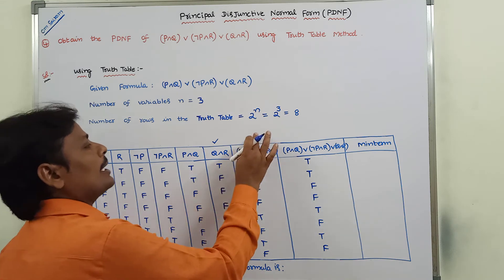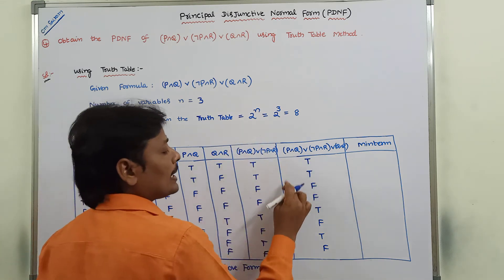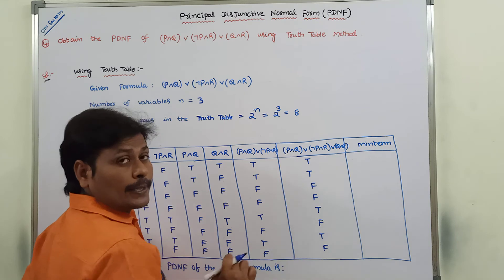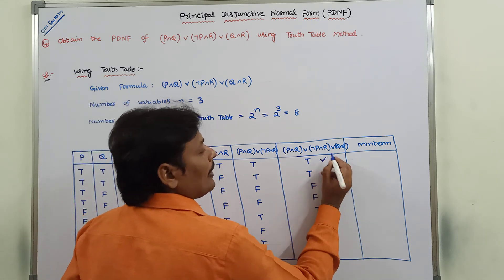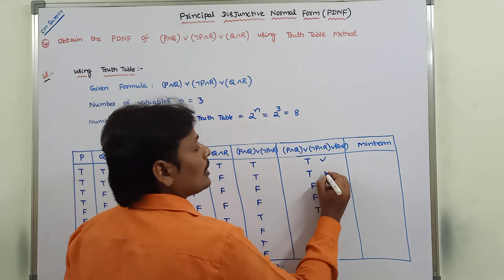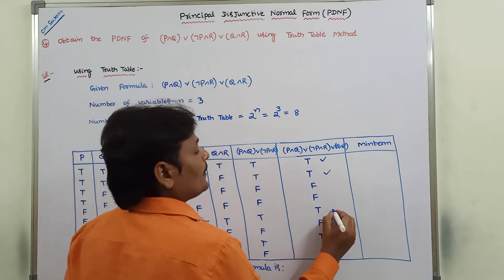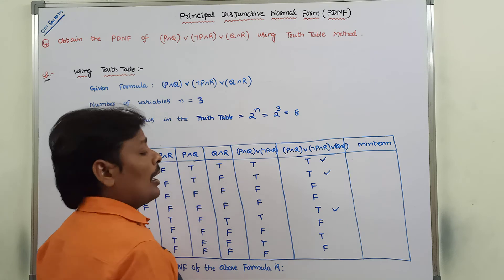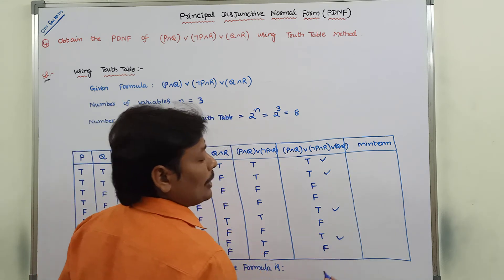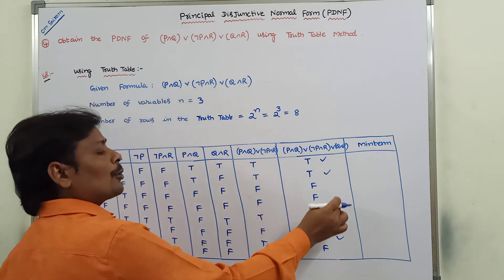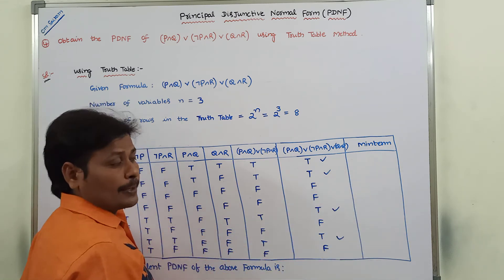Next, we have to write the min terms by considering only the true values in the final column. The first row contains true, the second row contains true, the fifth row contains true, and the seventh row contains true. For these four true values we have to write the min terms.